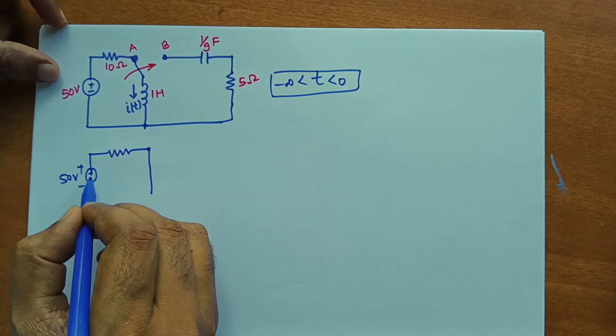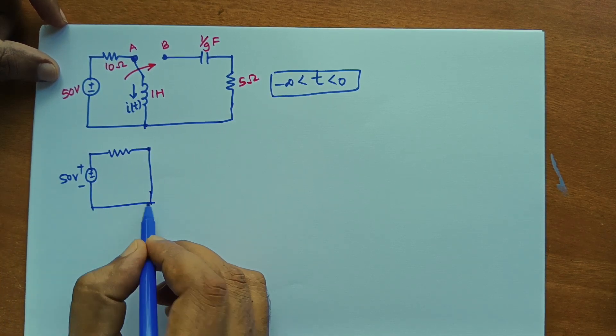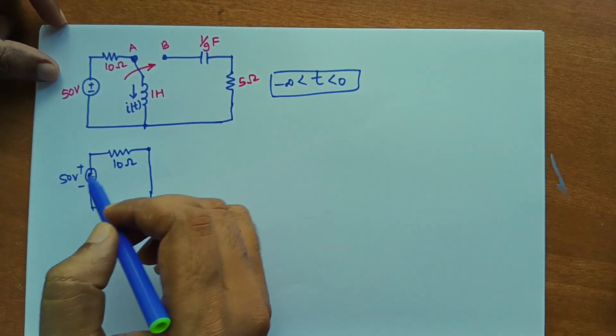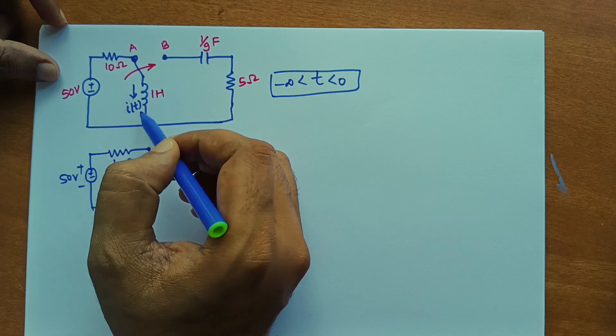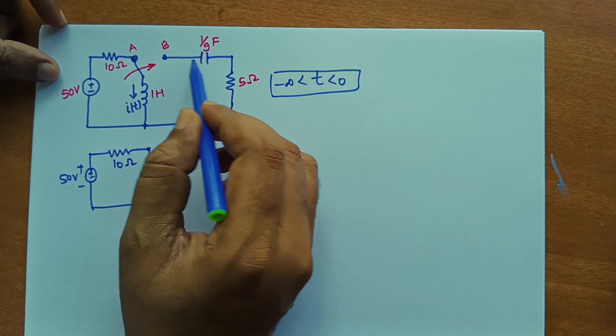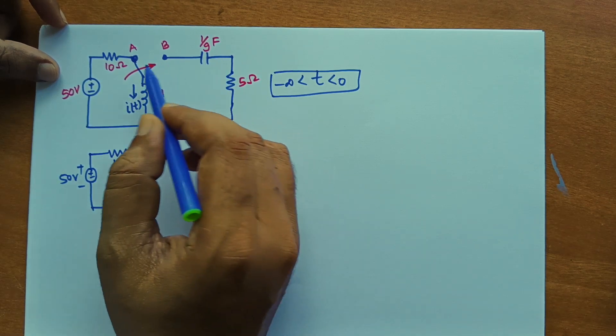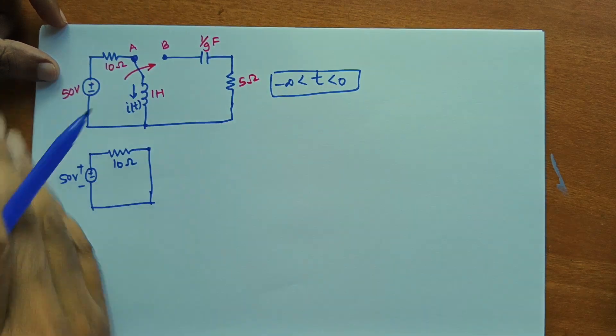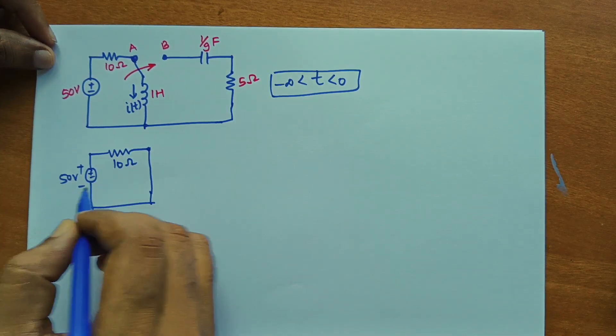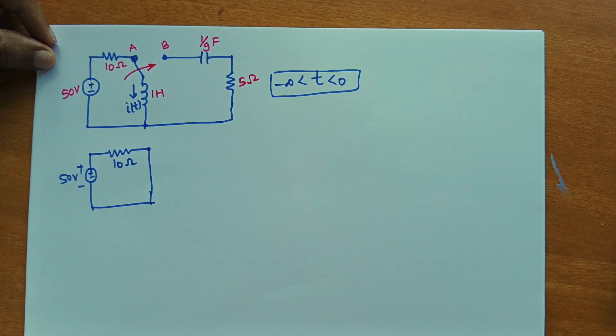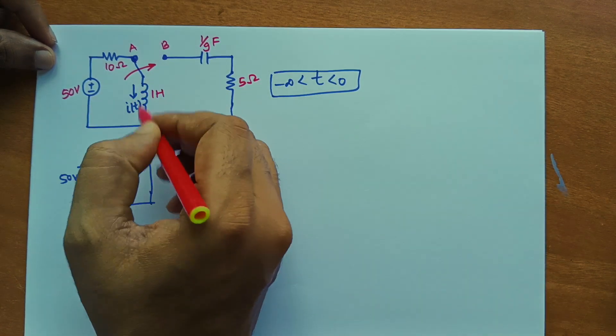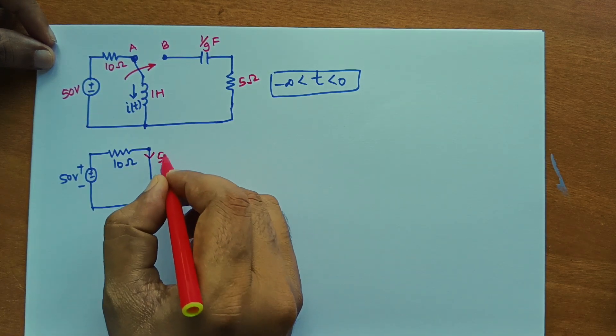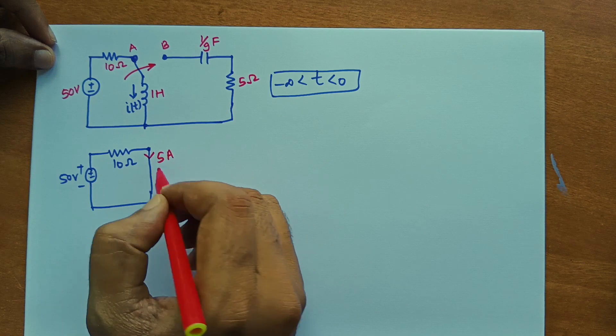50 volt and 10 ohm. So what happens? This inductor will be short circuited and capacitor will be open circuited. Although it is already open, so this entire section is not in the picture when switch is on. So the current flowing through this branch which contains the inductor originally is 5 amps.